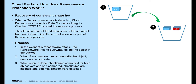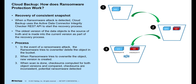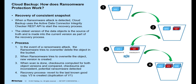When the scan is done, checksums are computed for both object versions and compared. If the checksums are inconsistent, a potential ransomware attack is detected. For the recovery process, it will revert to the last known good copy and a version 3 will be created, which is an exact duplicate of version 1.